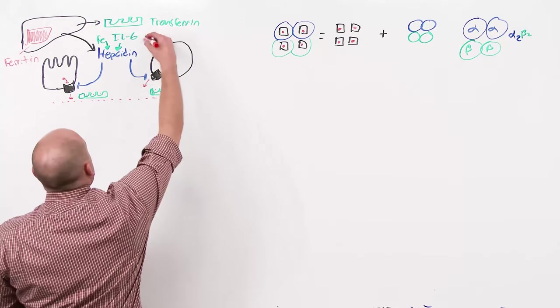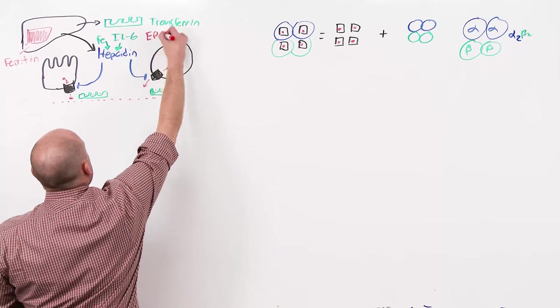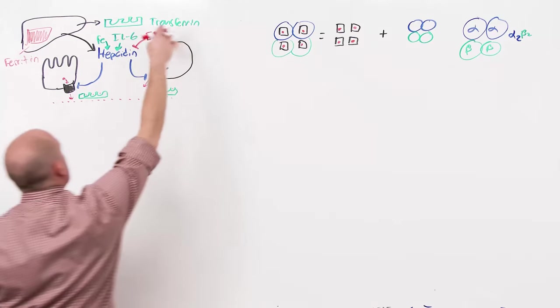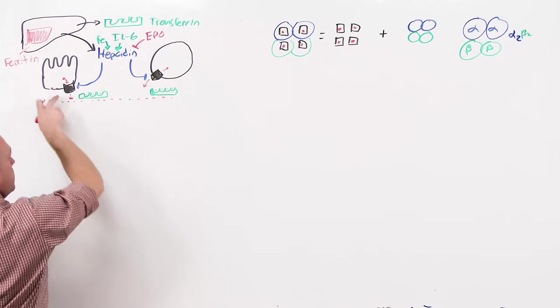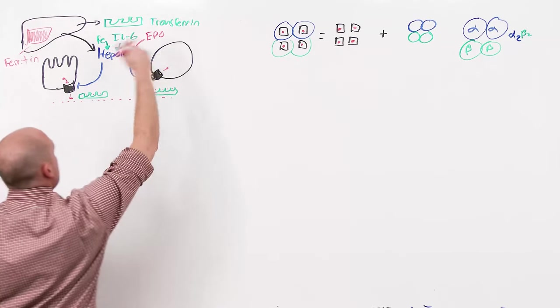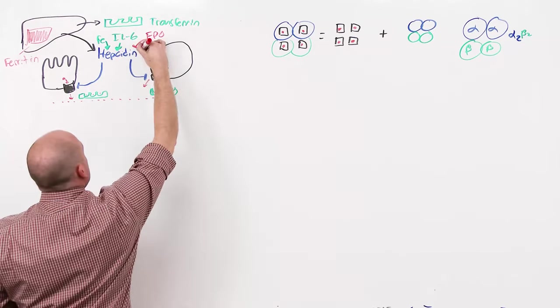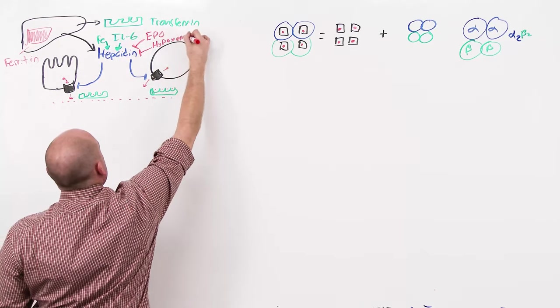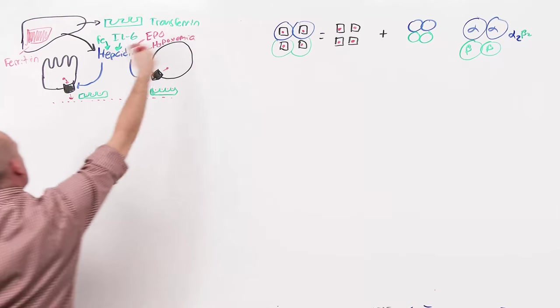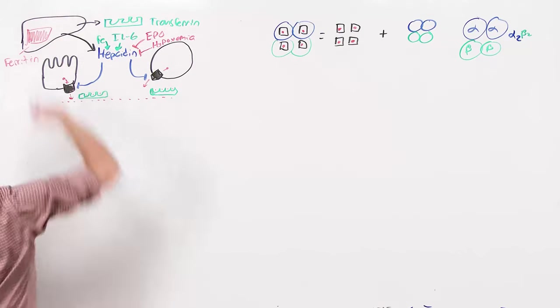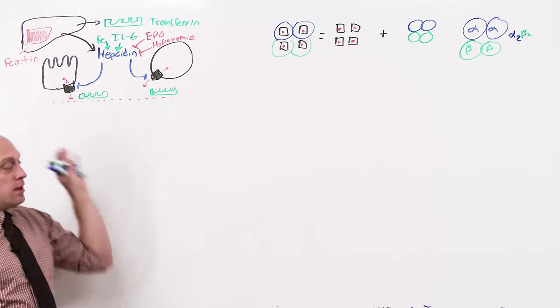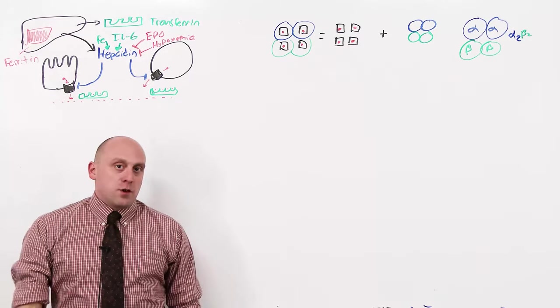Hepcidin's production is inhibited by erythropoietin. When the kidney says, make me some more red blood cells, those red blood cells are going to need hemoglobin, they're going to need iron. So EPO turns off hepcidin. The other thing that turns off hepcidin is hypoxemia. EPO is how the kidney senses for hypoxemia. Hypoxemia also negatively impacts hepcidin at the level of the liver. This is how you should be able to explain all the diseases that involve iron.